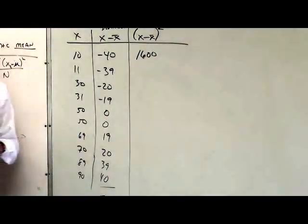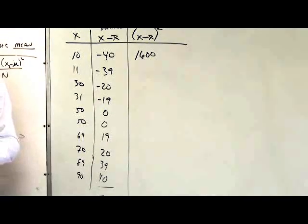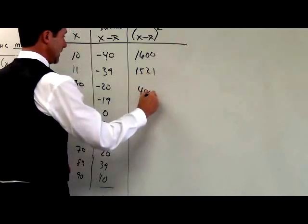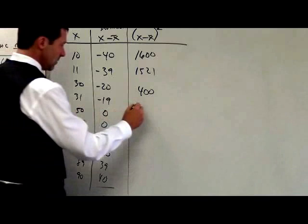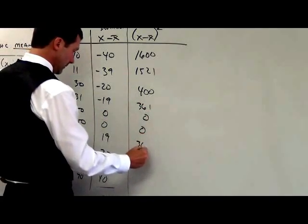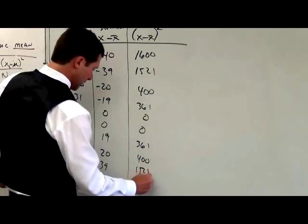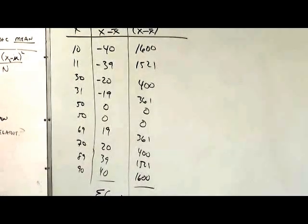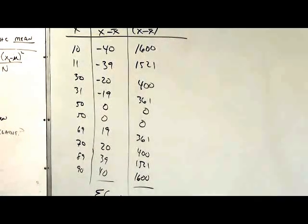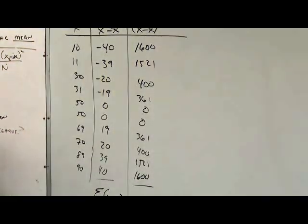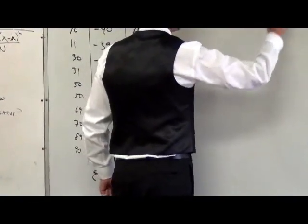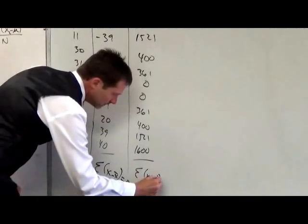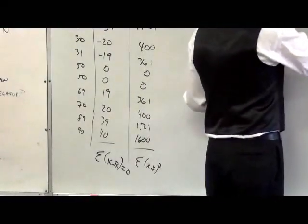Anybody got the second one for me? Nineteen squared — three sixty-one. Zero squared — that's just zero. Then three sixty-one, four hundred, and so on. Now, somewhere down the line, we're going to have to take the square root to get these things back in reality, but at least we've gotten rid of all the negatives. So let's add them up. Seven thousand seven hundred sixty-four. All right, this number means nothing to us right now.